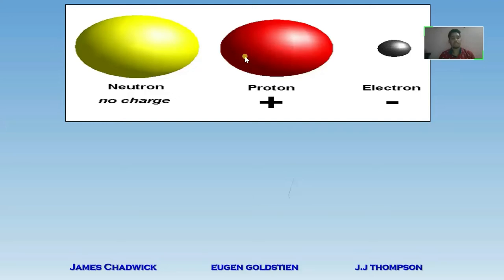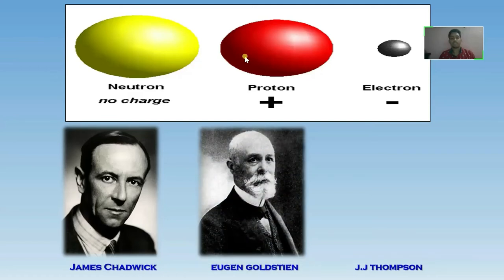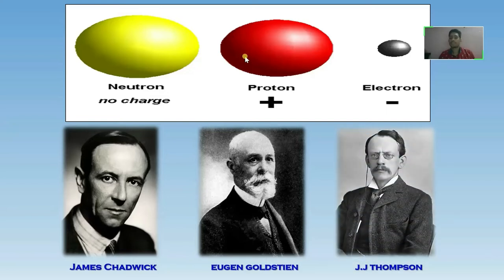Let's see who were the people behind the discovery of fundamental particles of an atom. They were none other than James Chadwick who discovered neutron in the year 1932, Eugen Goldstein who discovered proton in the year 1886, and electron was discovered by Sir J.J. Thompson in the year 1897.